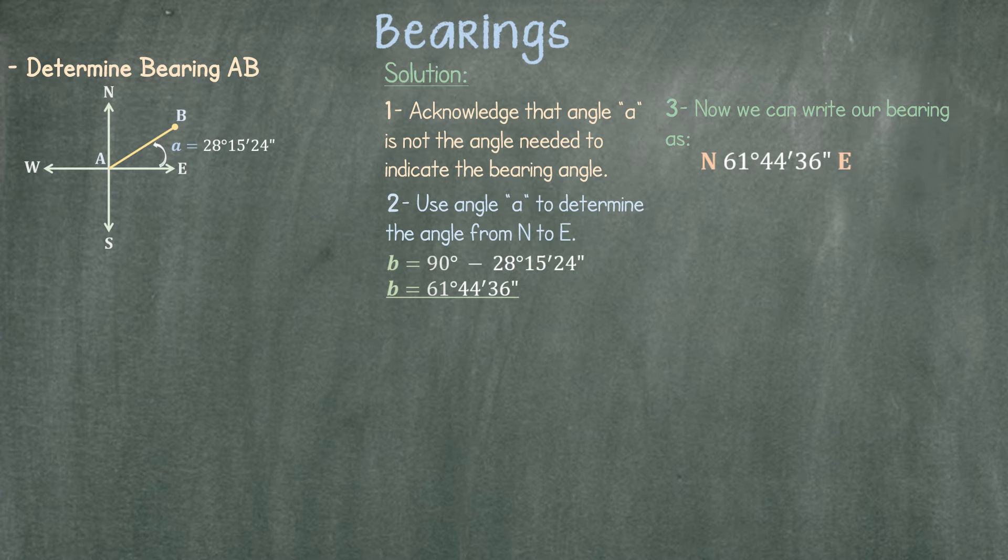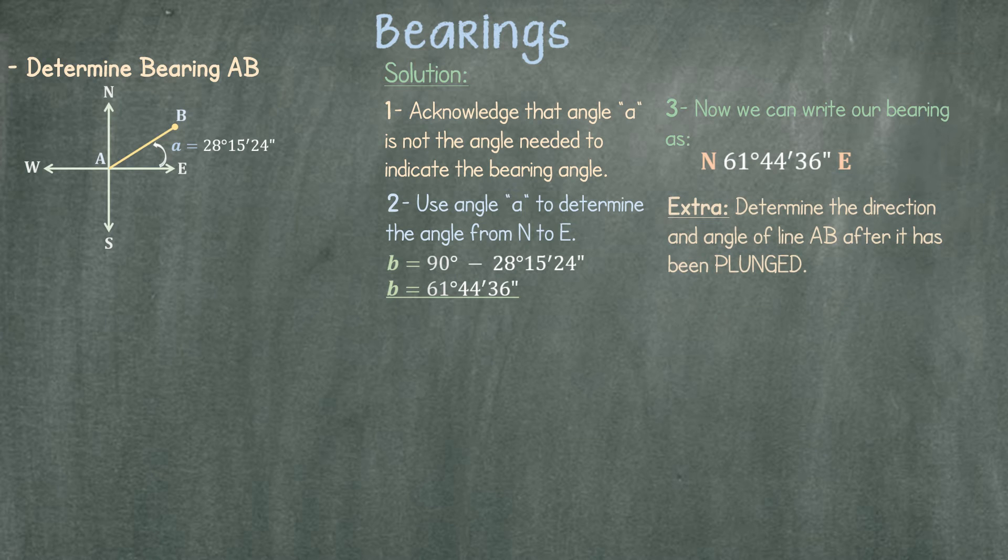What if, in addition to the given information, we were told that the telescope had been plunged to the right? Our bearing would be south 61 degrees 44 minutes 36 seconds west. Please see our previous video in case you need help on what the term plunge means.